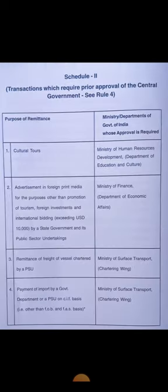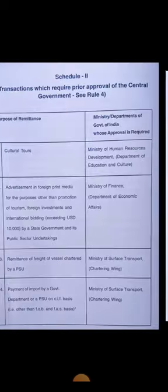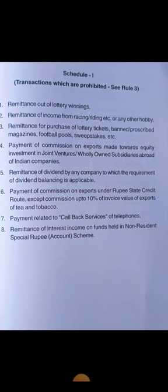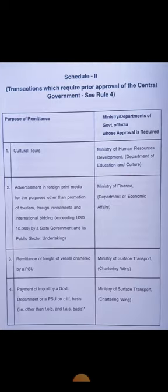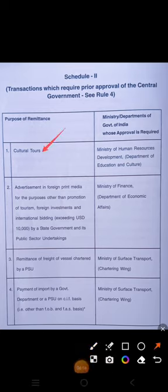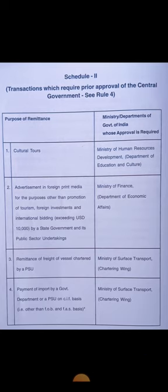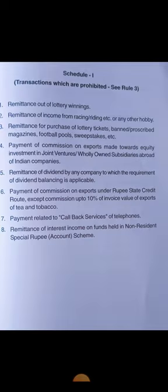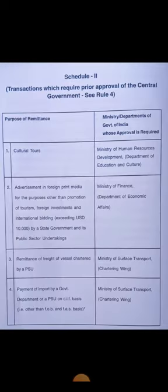Next, we look at transactions which require prior approval of the central government — these are listed under Schedule 2. These transactions are not prohibited, but we need approval from the central government before proceeding. For example, the purpose of remittance includes cultural tours and advertisement in foreign print media.